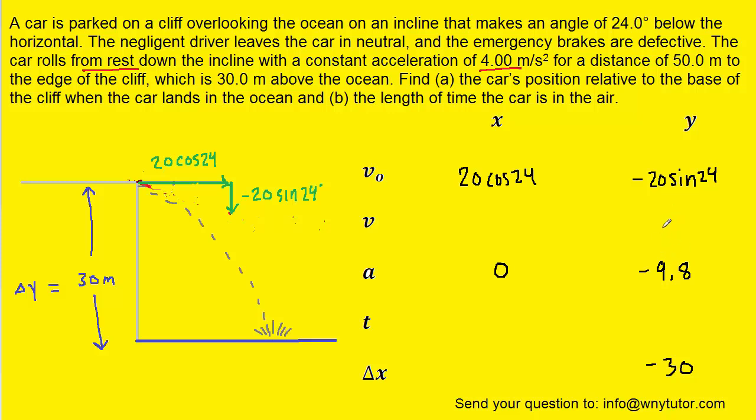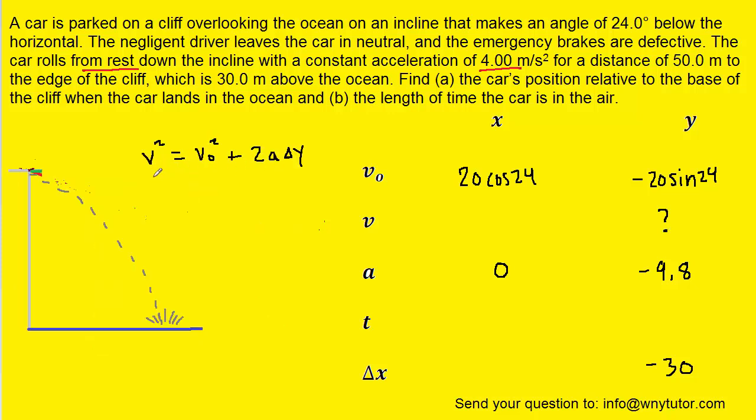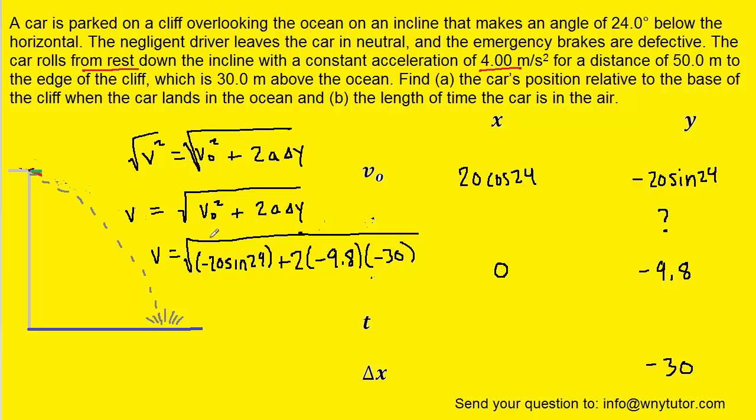Now we actually have sufficient information to calculate the final velocity in the y direction, so we'll go ahead and do that. We'll show the work over here with the following equation from kinematics. Again, we're plugging in the known values for the y direction so we can solve for the final velocity in the y direction. In fact, we might want to take the square root of both sides of this equation first so that we can isolate v. Then we'll plug in the known values. When you compute this on your calculator, you're probably going to end up with a positive value of 25.6, but we have to keep in mind that because the car is moving downward, we have to put a negative sign on that final velocity. So just be very careful there. Final velocity therefore turns out to be negative 25.6 meters per second.